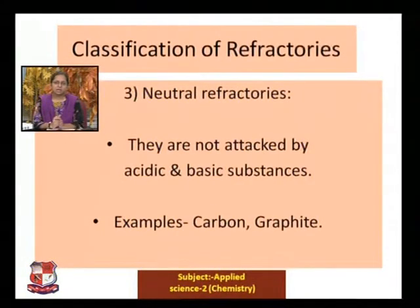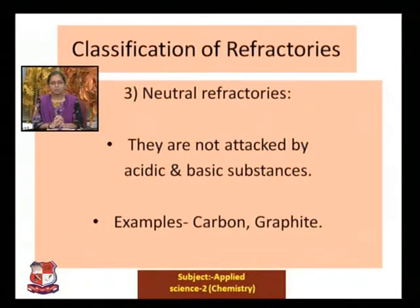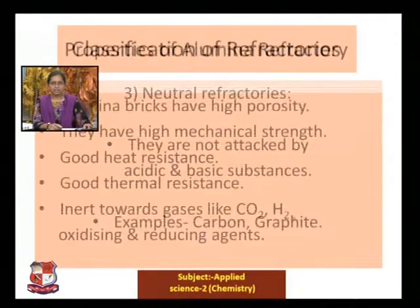Neutral refractories are not attacked by either acidic or basic substances, which is why they are called neutral refractories. Examples include carbon and graphite.